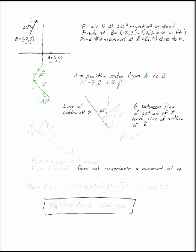And then, if you want to find the angle between your line of action of R and your line of action of F, we know that F is 20 degrees from vertical as well. So theta, the angle between the two lines of action, has got to be 65 degrees.